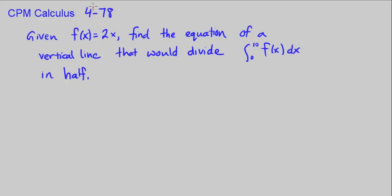This is CPM Calculus Chapter 4, Number 78. Given f(x) = 2x, find the equation of a vertical line that would divide the integral from 0 to 10 of f(x) dx in half.